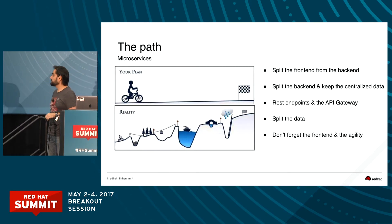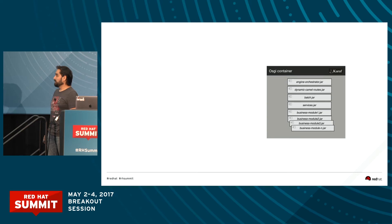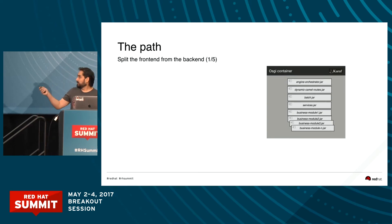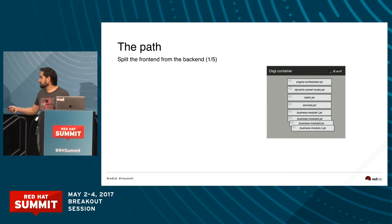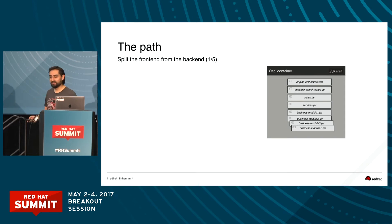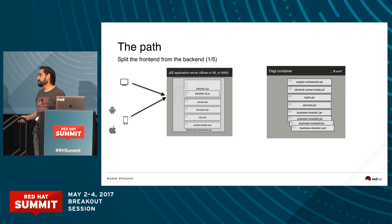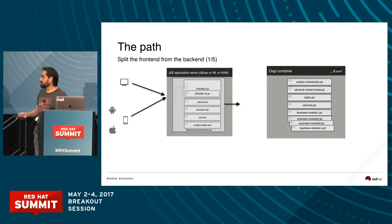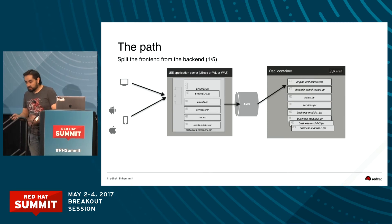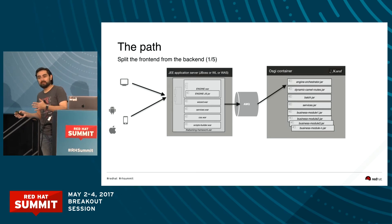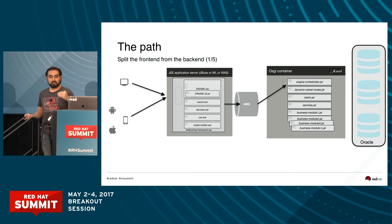We start like this: we have an OSGI container with several modules. All the channels call to the WAR file that handles the front end. Then we start to split it — we put a message queue inside and split those two tiers. Why? Because we want to later move all the back end to microservices. This was the first step without even changing the interfaces — I just split the two tiers.